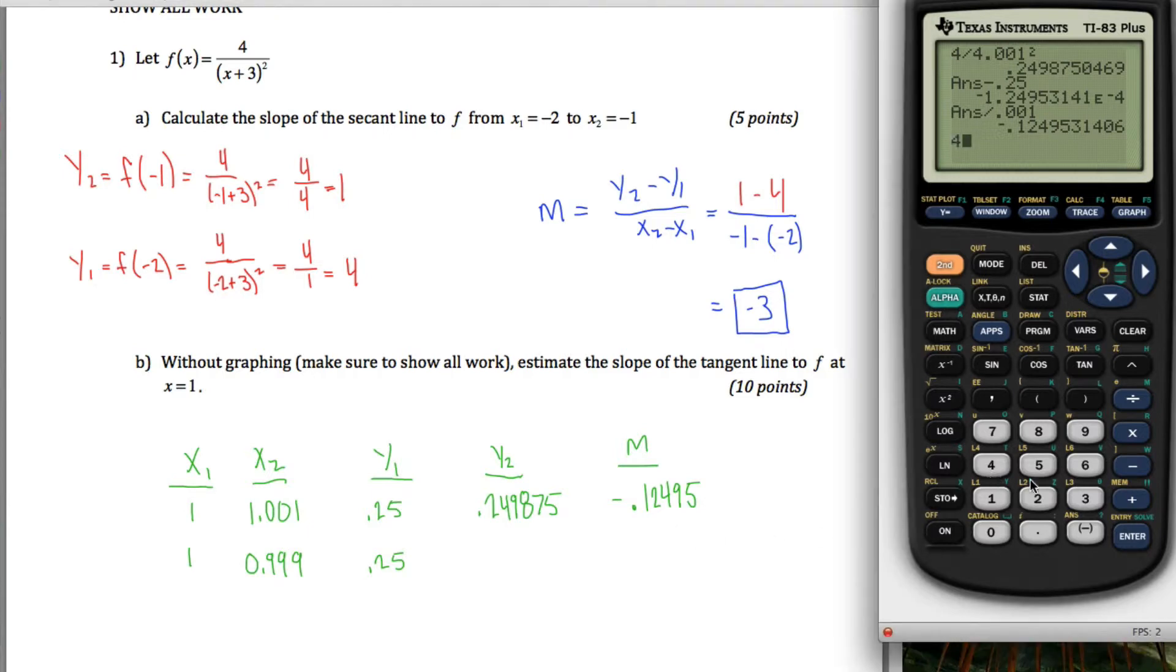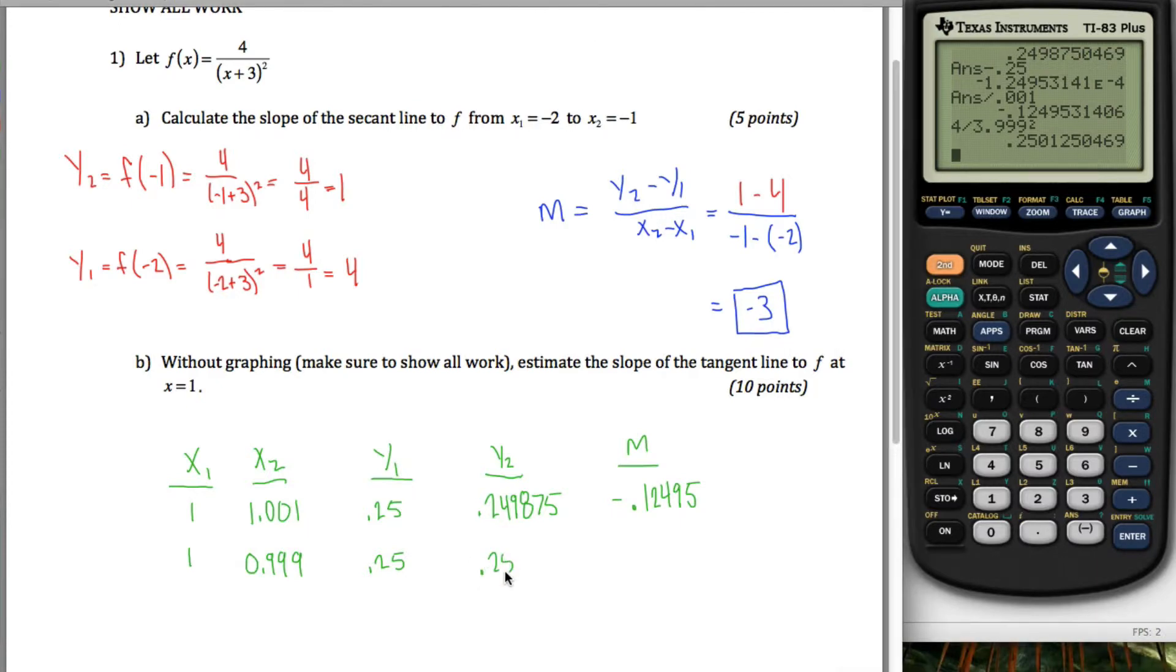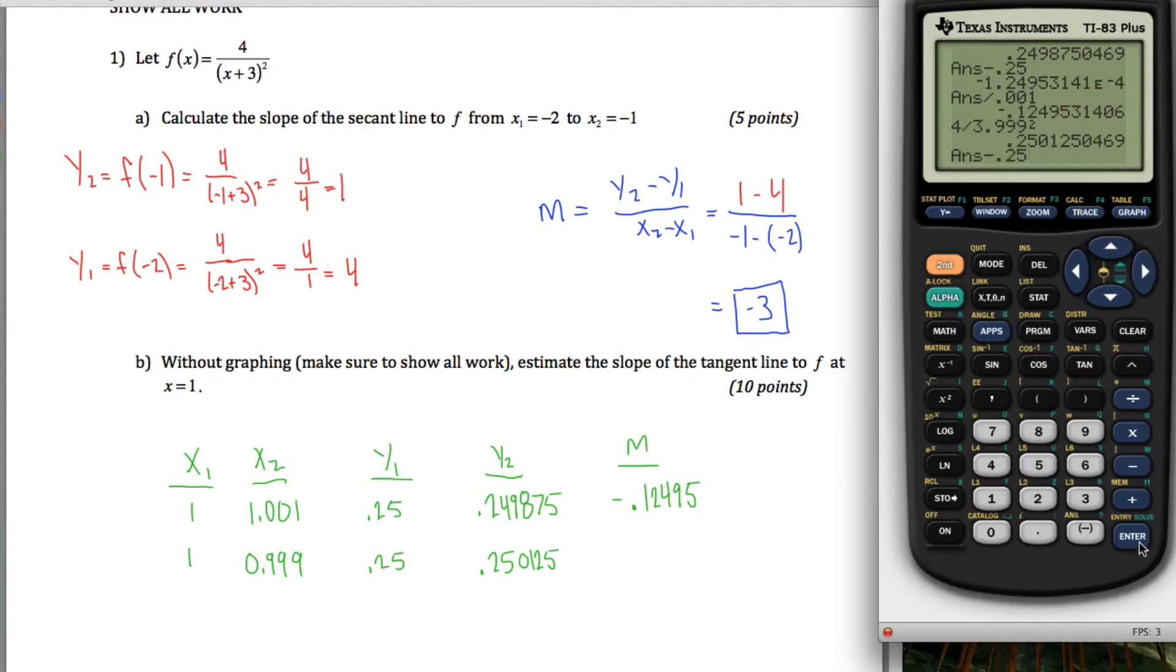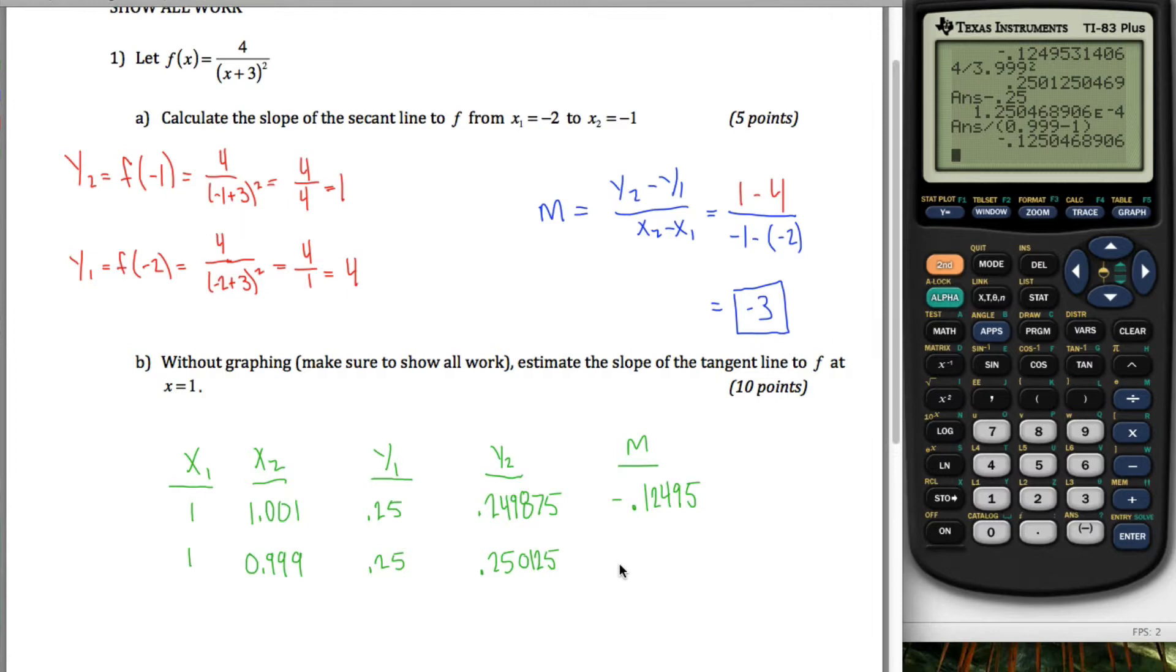We'll do that one more time except instead of 4 divided by 4.001 squared, I'm going to do 4 divided by 3.999 squared, that 3.999 was 0.999 plus 3. And if I get that it gives me y2, .250125 approximately, and then I calculate my slope by doing that, minus .25 divided by x2, I'll actually show the steps here, 0.999 minus x1, hit enter, and I get negative 0.125005.